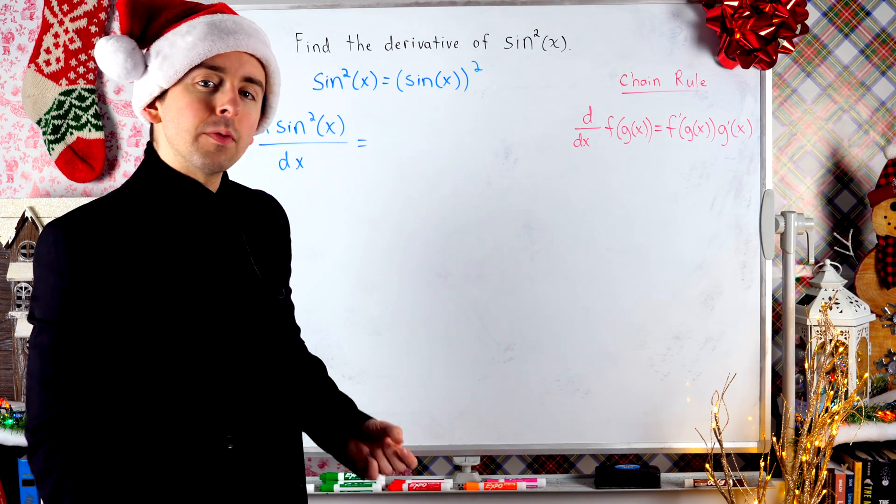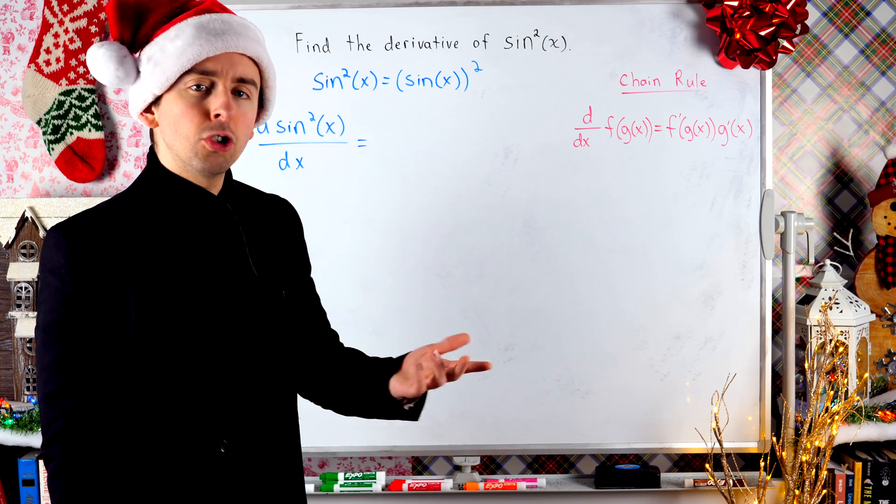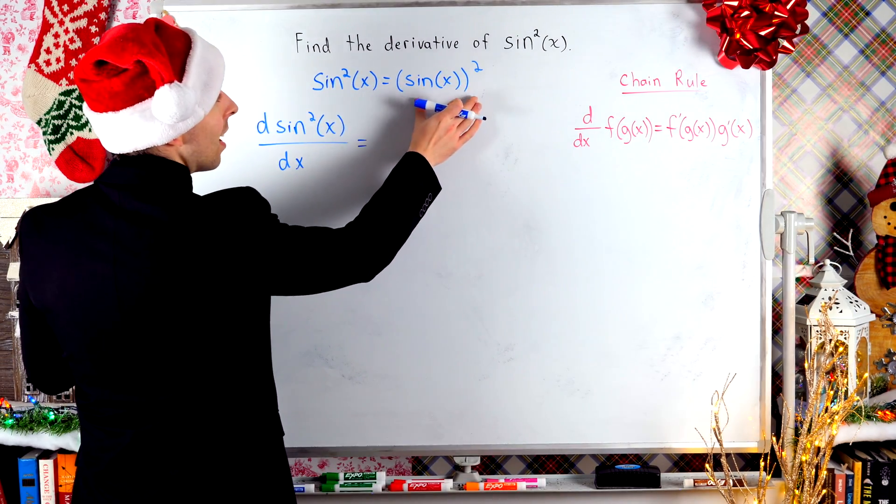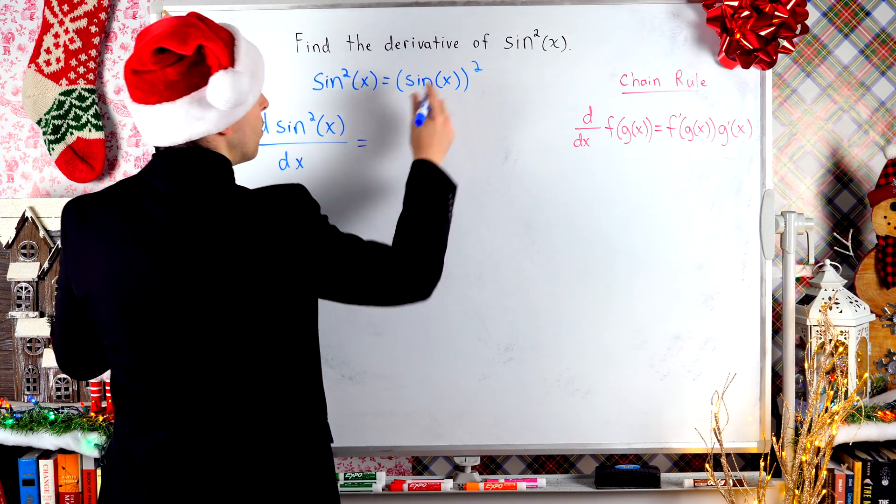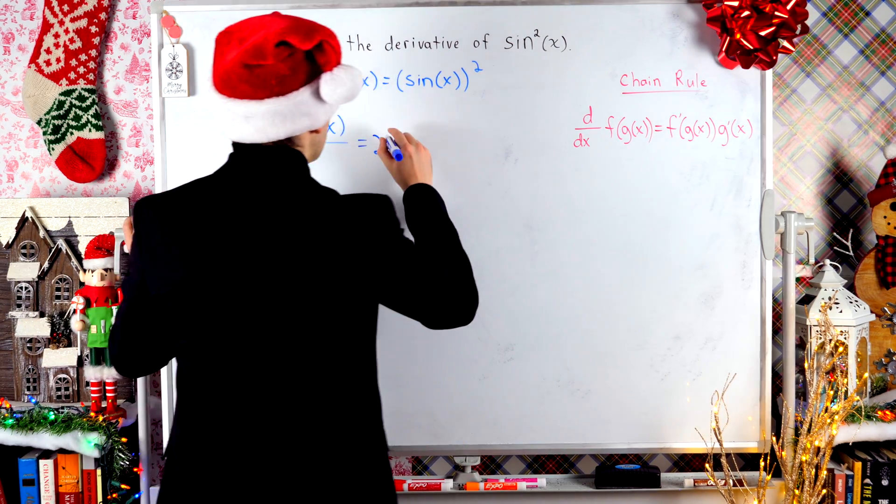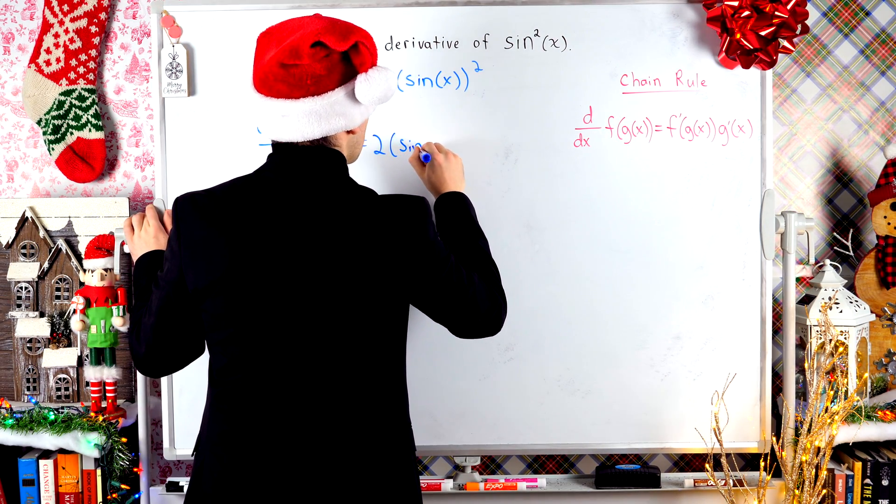The derivative of x squared is 2x. Similarly, when we take the derivative of the outside function here, we just have 2 times whatever was getting raised to that power of 2. It's just the power rule.